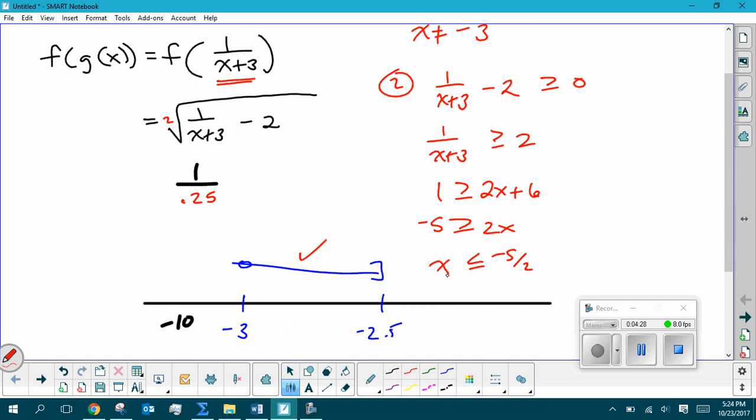If I try a number like 10, again, we get 1 over 13 minus 2. Well, that's a negative number underneath the radical, so that does not work. So we got values over here that don't work. Values in the middle that do work, negative 3 to 2.5 do work.